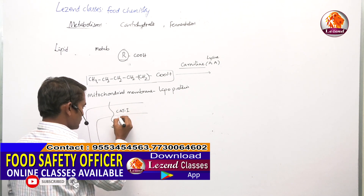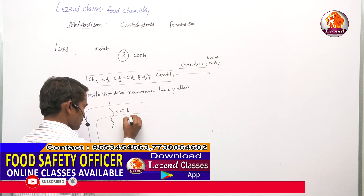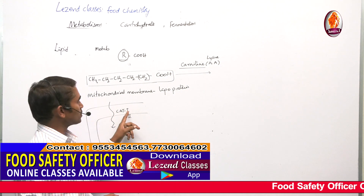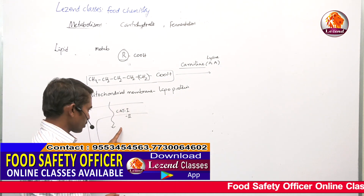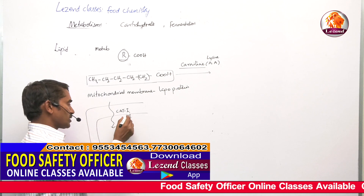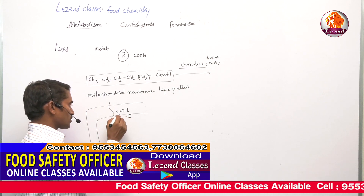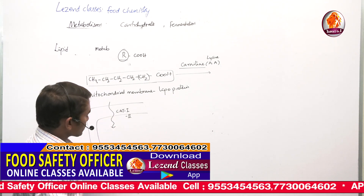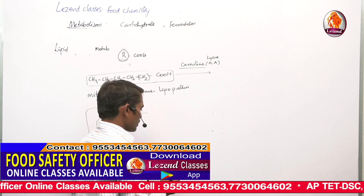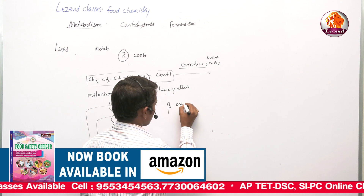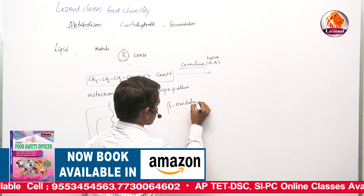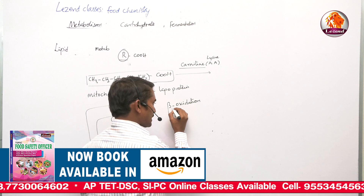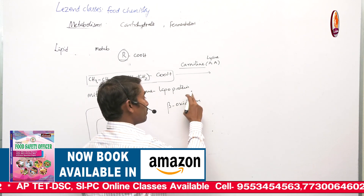The enzyme carnitine acyl transferase comes into picture, and it exists in two forms: CAT-1 and CAT-2. Carnitine acyl transferase-1 transports lipid into the mitochondrial space, and carnitine acyl transferase-2 transfers it across the inner membrane. Once these molecules enter the matrix of the mitochondria, they undergo beta-oxidation. Every time oxidation occurs at the second (beta) carbon atom, therefore it is called beta-oxidation.